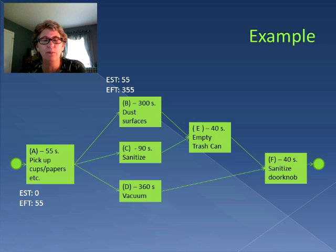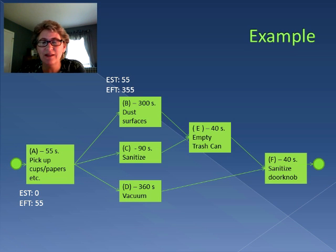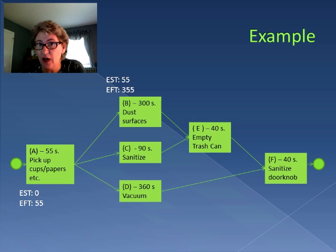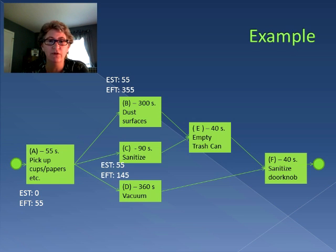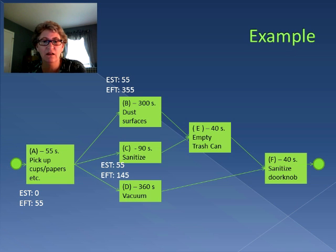Activity B has to wait until Activity A is completed, which means Activity B cannot start until Activity A finishes, so the earliest it can start is time 55. We add the 300 seconds that activity lasts, and so Activity B can finish at 355. We do the same thing with Activity C — it can start at time 55 and it finishes at 145. Activity D starts at 55 and finishes 360 seconds later at 415.